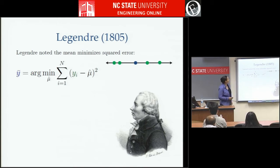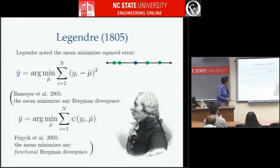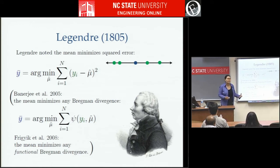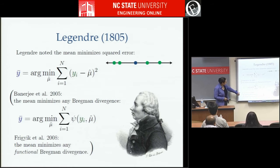The mean is really very robust in this sense. Banerjee and Dillon in 2005 showed that not only does the mean minimize the sum of squared errors, it minimizes the sum of any Bregman divergence. The Bregman divergence is a larger class of divergences than squared error — it includes relative entropy, Itakura distance, and some other distances. Bella and I extended this in 2008 to functional Bregman divergences to handle distributions and functions.